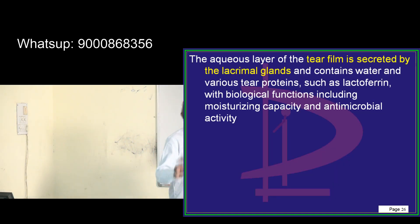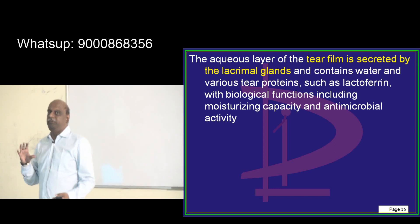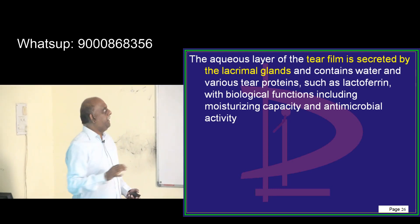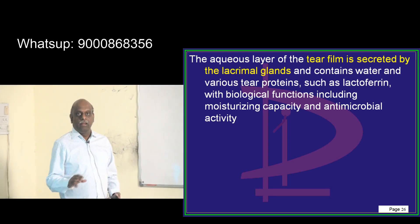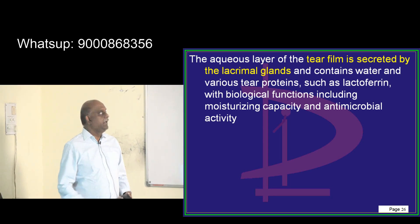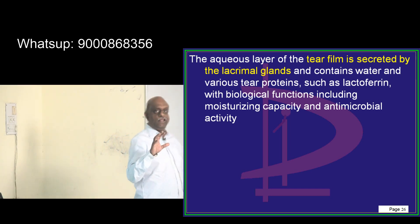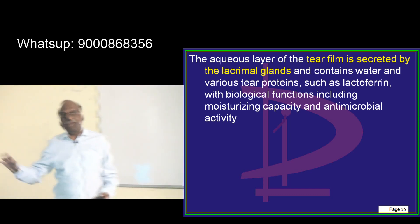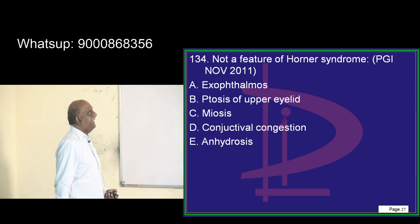The inner mucin provides lubrication and protection by preventing foreign body deposition. The aqueous layer of the tear film is produced by the lacrimal glands, and the lipid layer is produced by the meibomian glands.